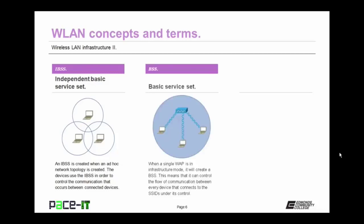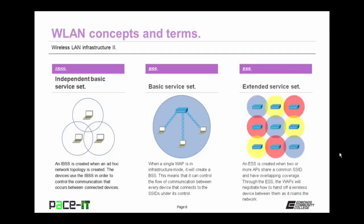Then there's the BSS, or Basic Service Set. When a single wireless access point is in infrastructure mode, it will create a BSS, meaning it can control the flow of communication between every device that connects to the SSIDs under its control. Then there's the ESS, or Extended Service Set. An ESS is created when two or more access points share a common SSID and have overlapping coverage. Through the ESS, the WAPs will negotiate how to hand off a wireless device between them as it roams the network.